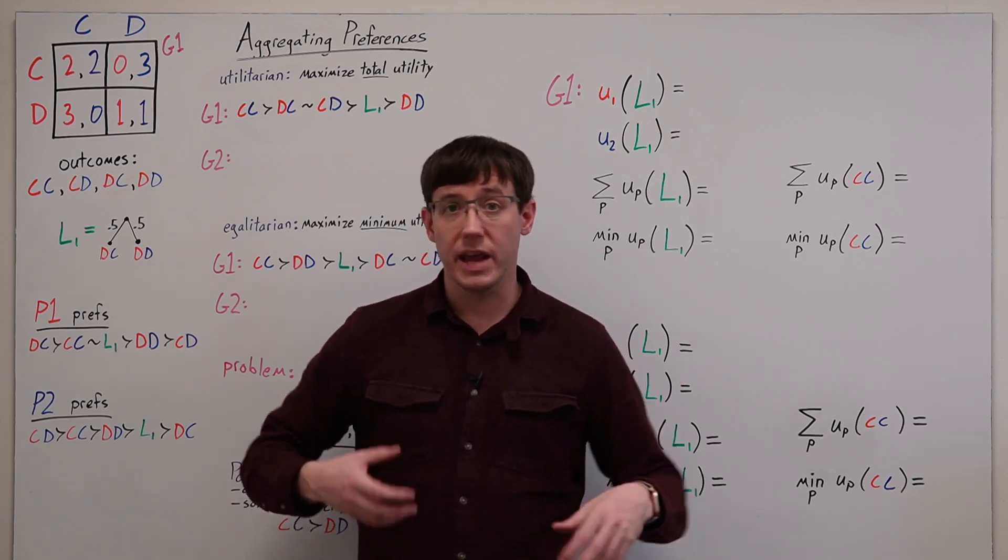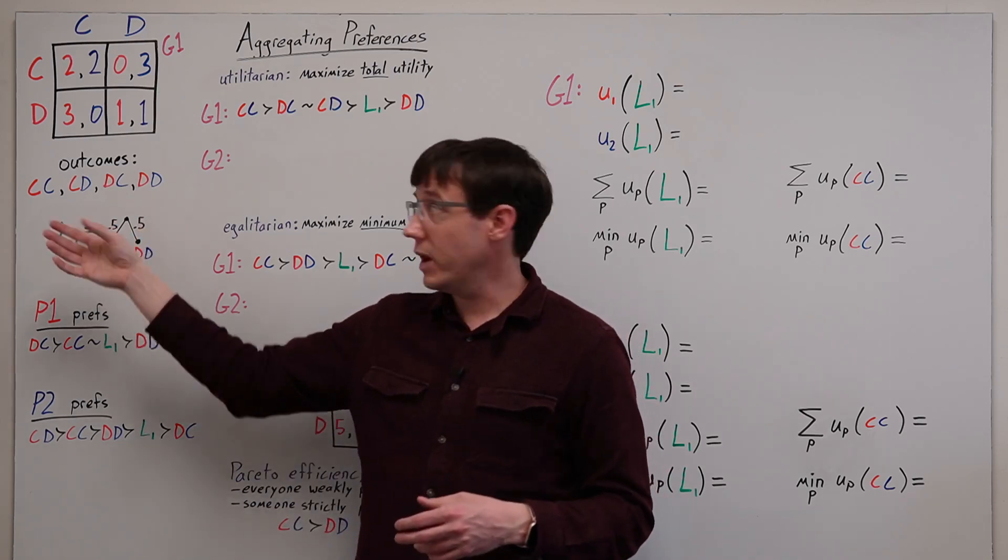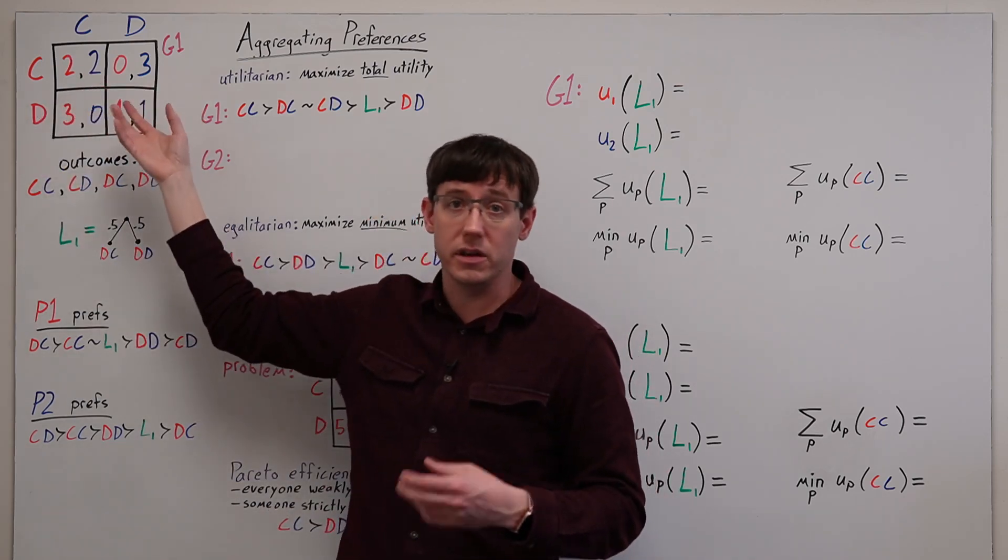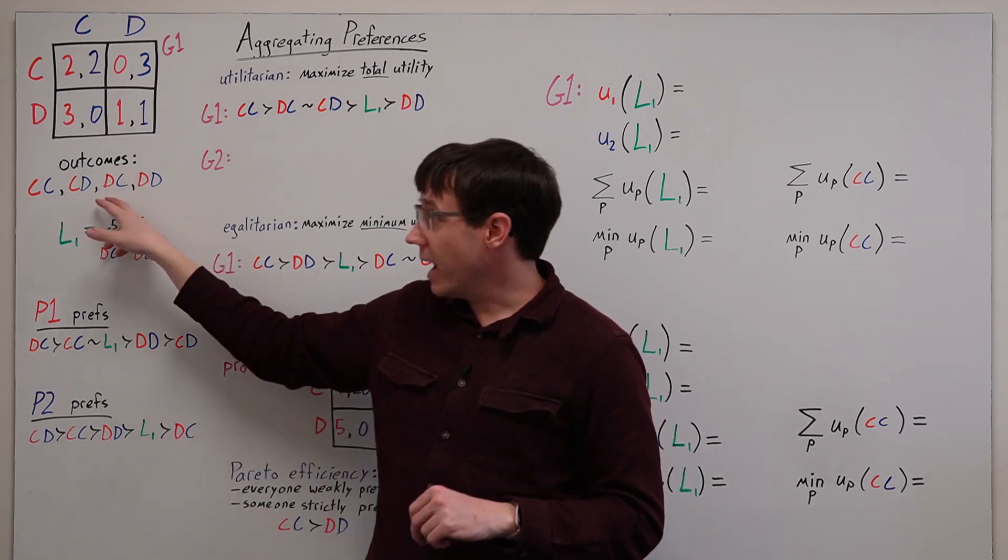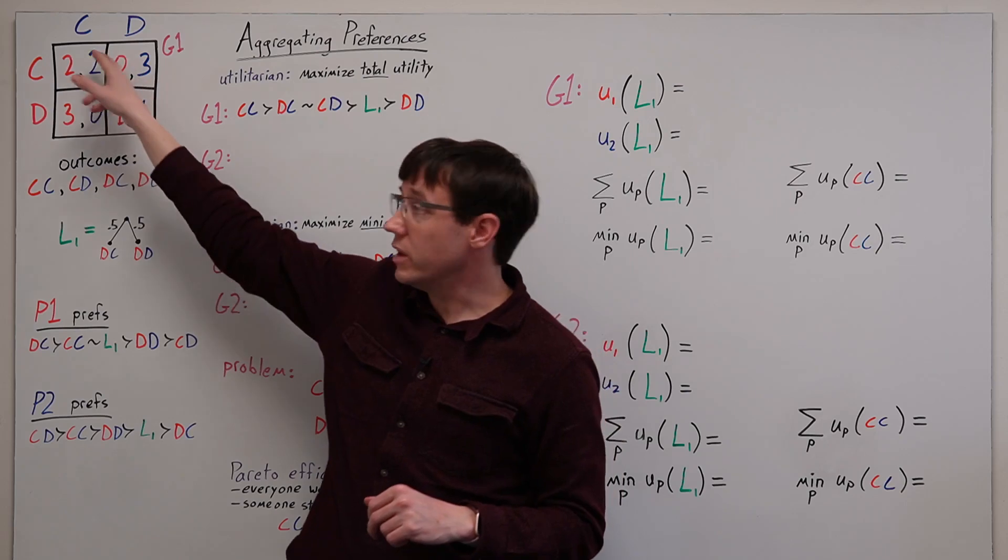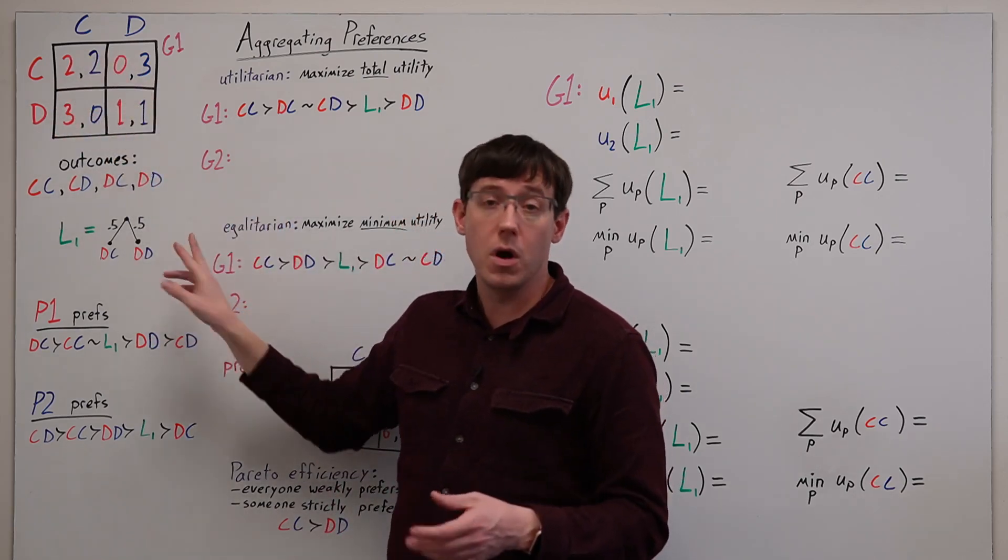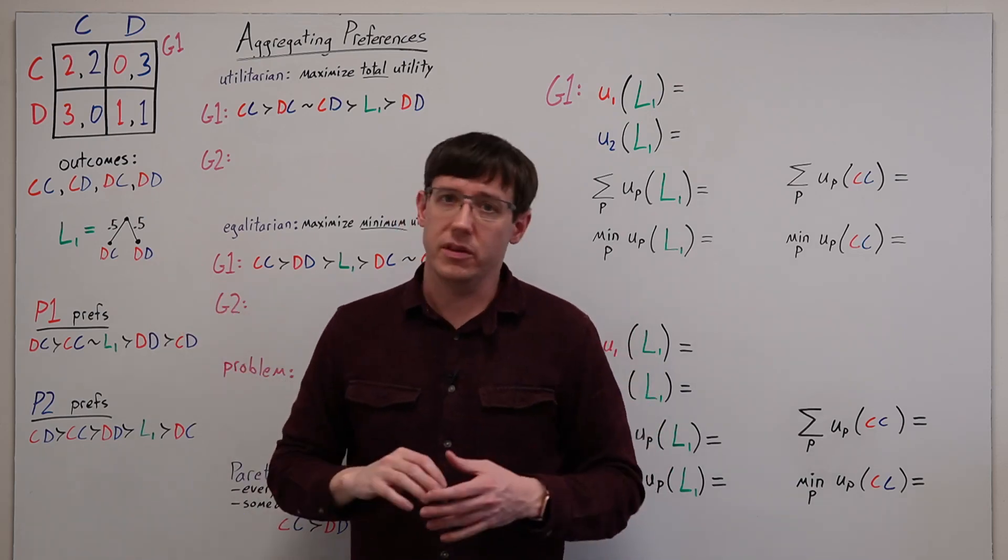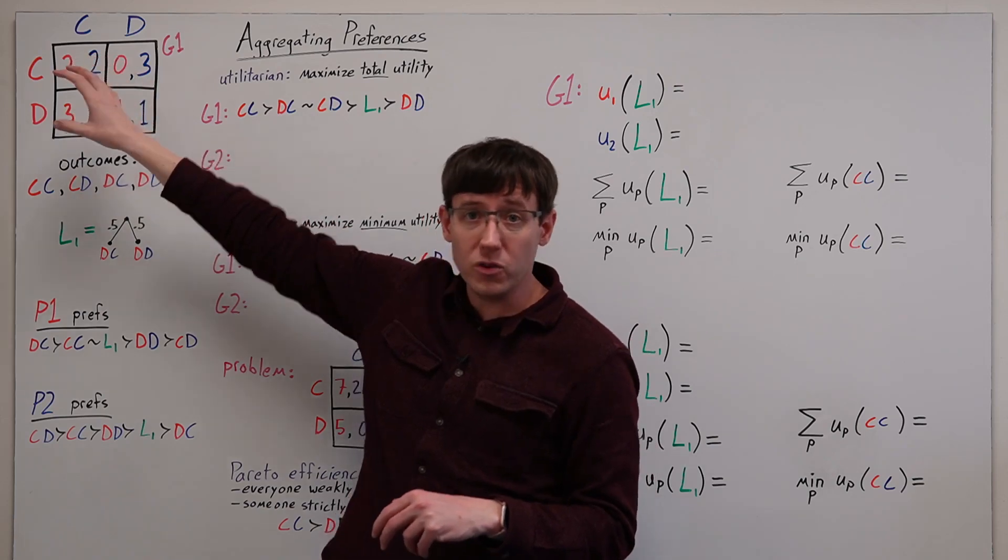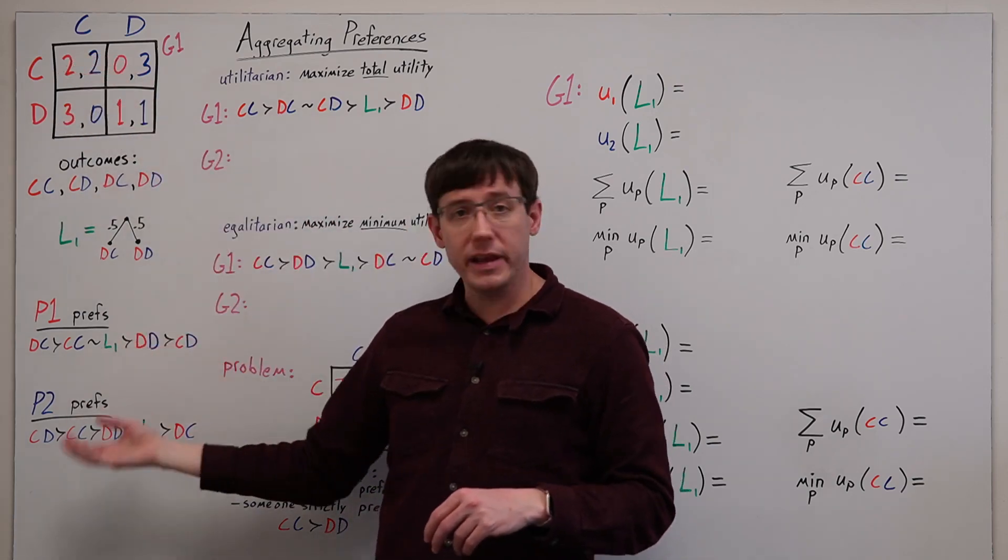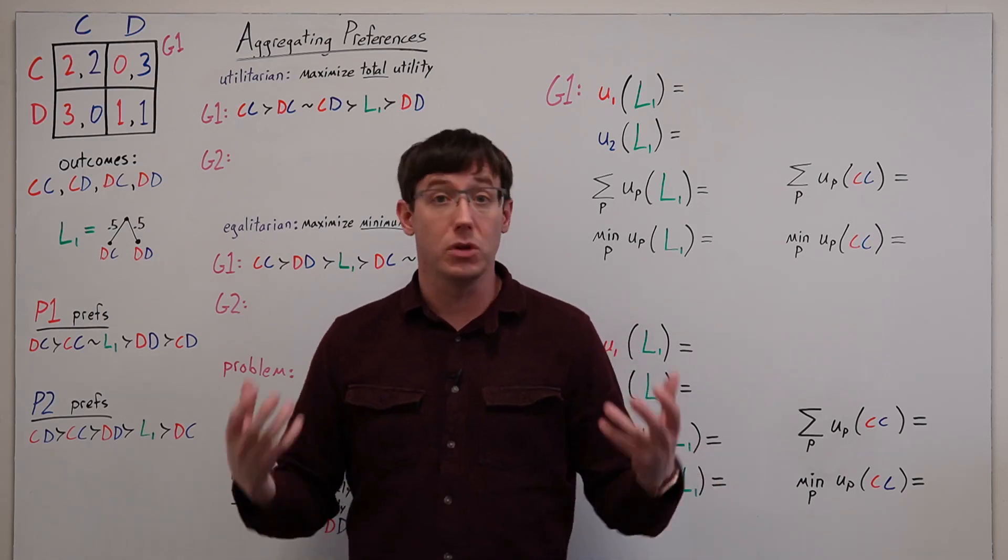Last time we described decisions in terms of outcomes and lotteries, but we know we can translate between that view and the actions and utilities of a payoff matrix. In a prisoner's dilemma, the outcomes correspond to the cells of the payoff matrix, and a lottery could result from one of the players randomizing their action. And so, using the utilities in the payoff matrix, we can express each player's preferences over the different outcomes and possible lotteries.